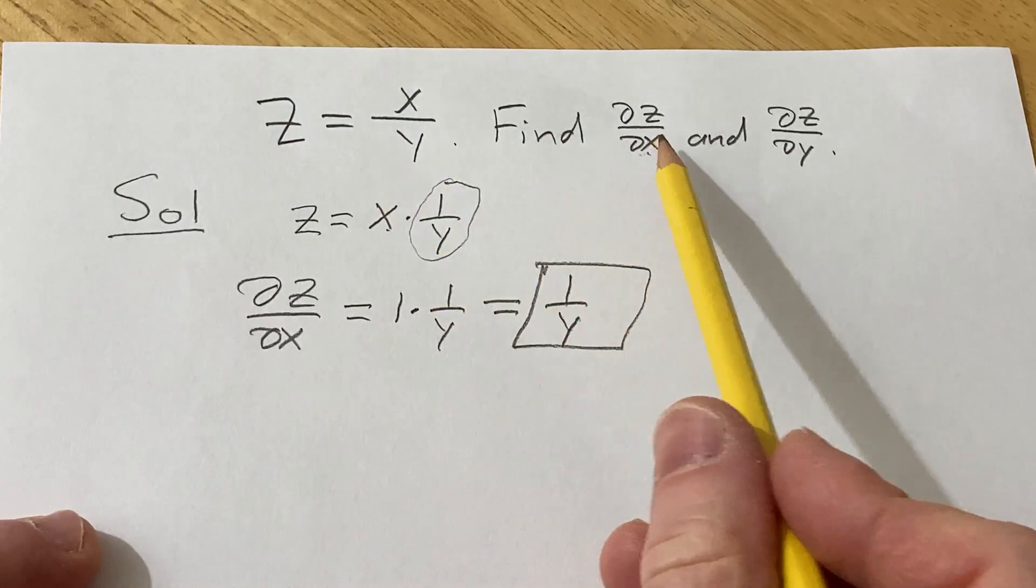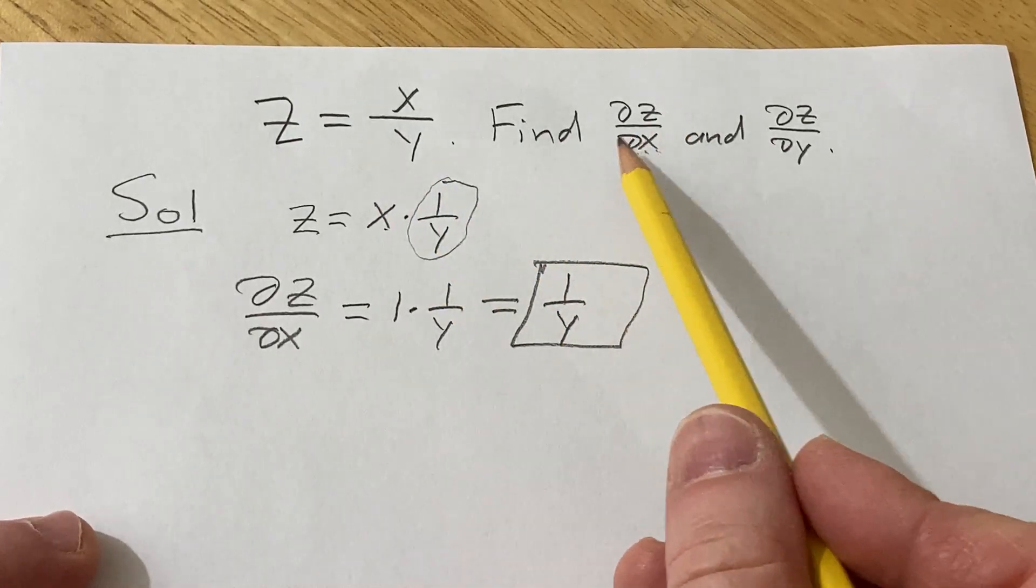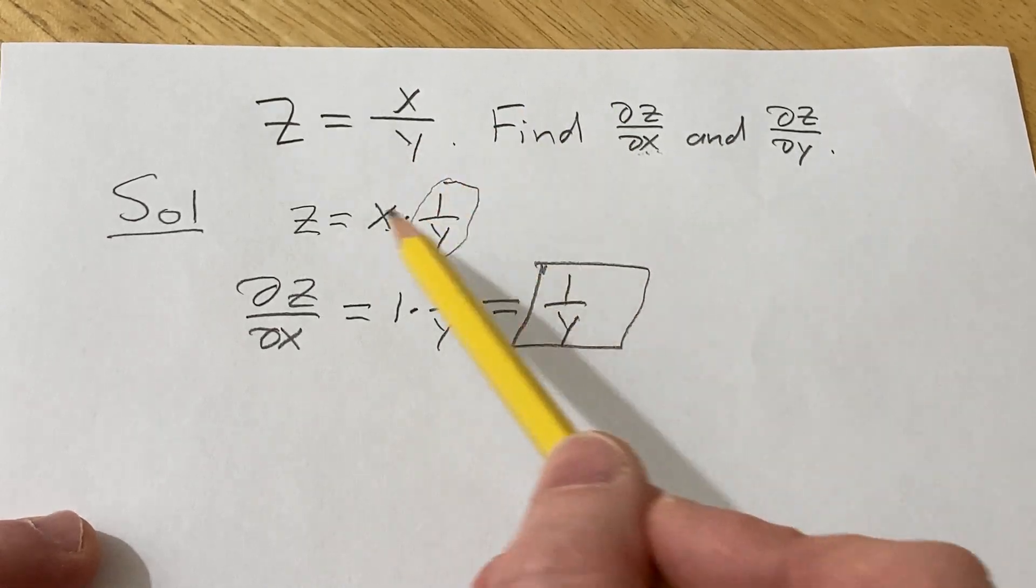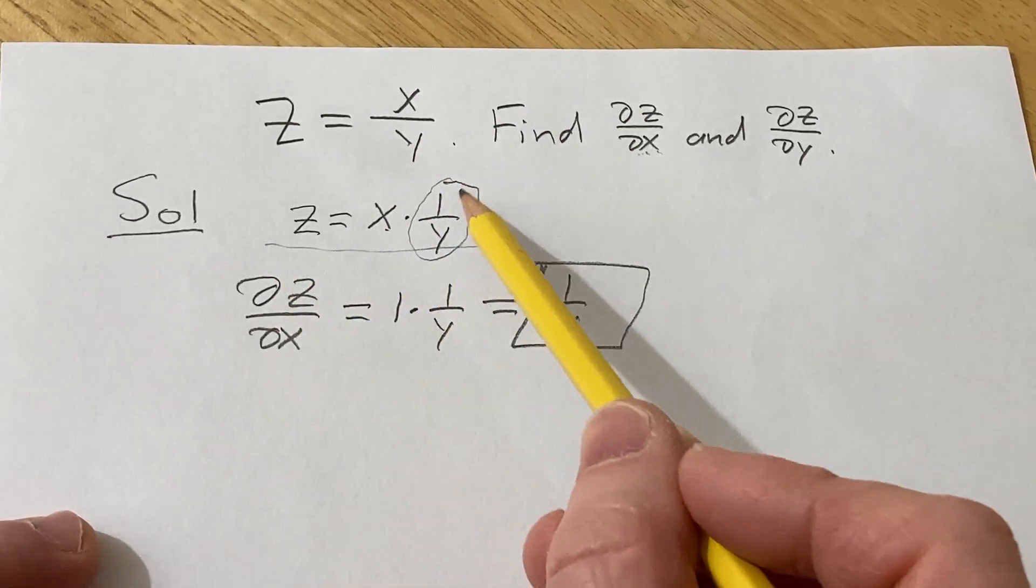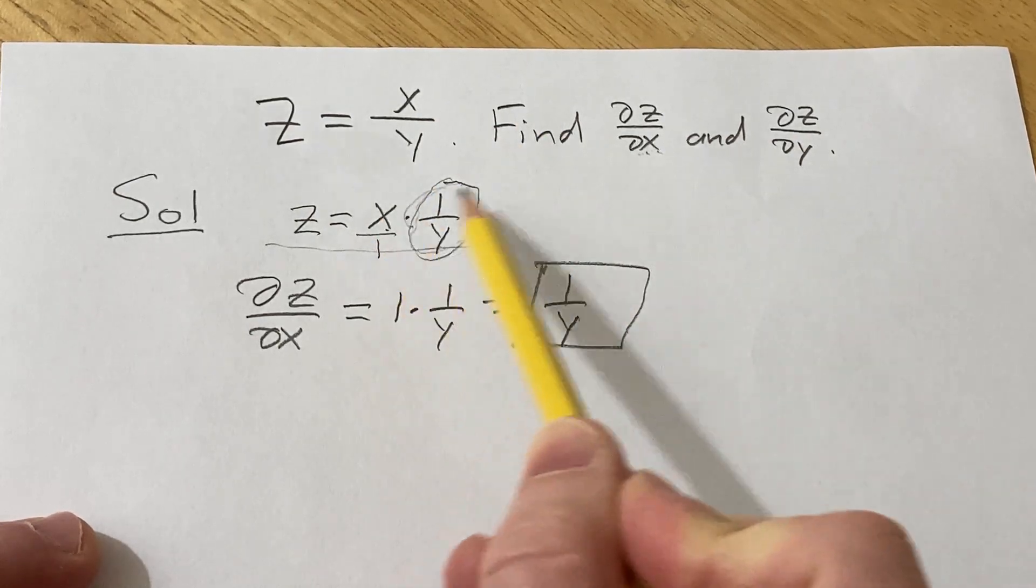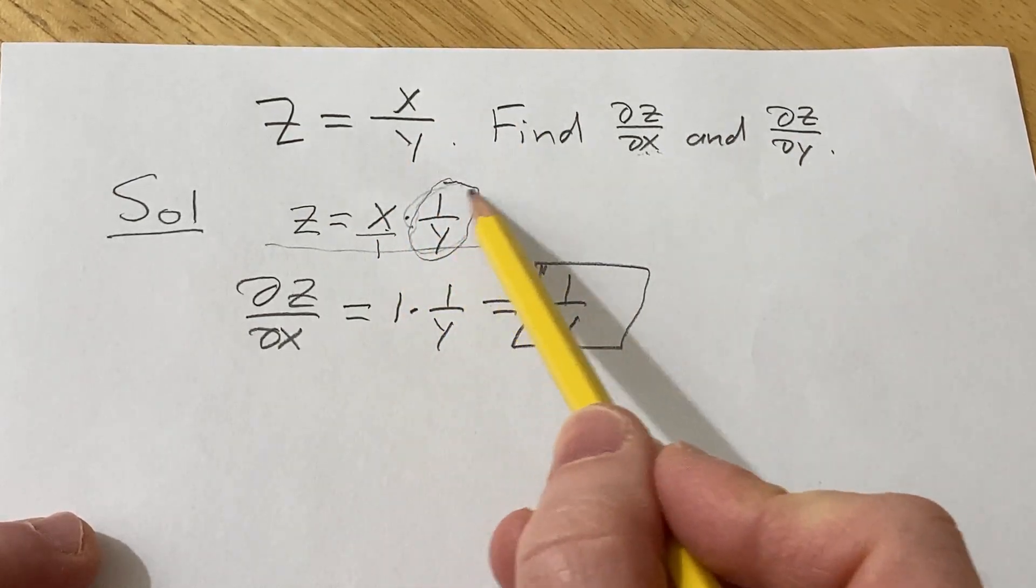Again, when you're finding the partial of z with respect to x, you want to treat all of the other variables as constants. So in this case, the bottom piece is a constant, so it helps to write it like this so you can clearly see it's being multiplied by a constant. This is really over 1, so these are the same thing. And so this just hangs out.